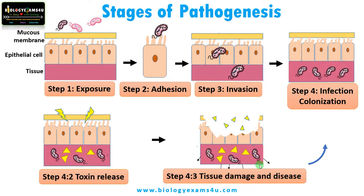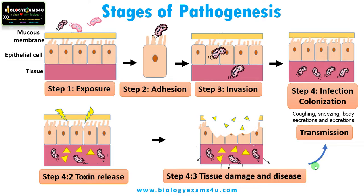After a successful infection, for the pathogen to persist, it must be transmitted to another host. Just like entry routes, there are many exit routes for the pathogen — like urogenital tracts, respiratory tracts, and all the openings. These exit routes include skin secretions and excretions, semen, vaginal secretions, and tears — all are routes through which the pathogen can move from a diseased host to a healthy individual. Some pathogens even rely on insects to transmit the disease.